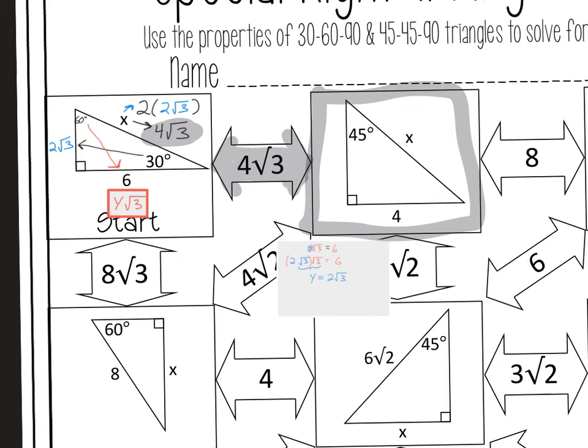And then after I complete that problem, then I'm going to figure out, is the answer 8? Then I'll go that way. Is the answer 8 root 2? Then I'd go down. Is the answer 4 root 2? Then I'd go kind of down and left. So depending on what you get for an answer here, that will tell us which direction to go. And you continue this process through the entire maze.